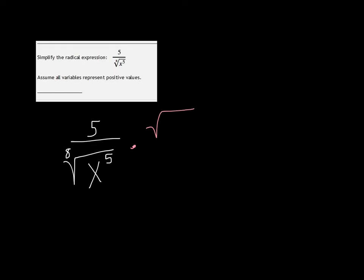So I need to multiply the top and the bottom by the 8th root of x cubed, because when I multiply that, I'm going to get the 8th root of x to the 8th power, which is just x.